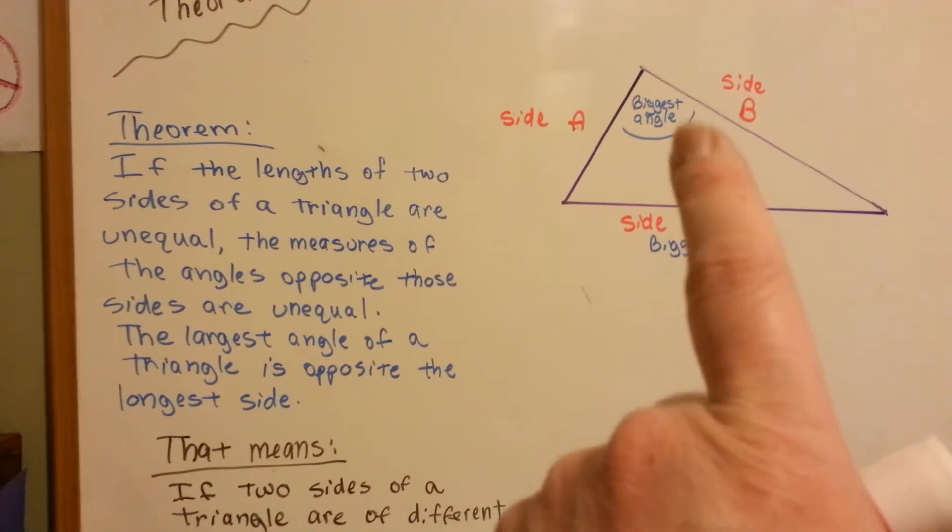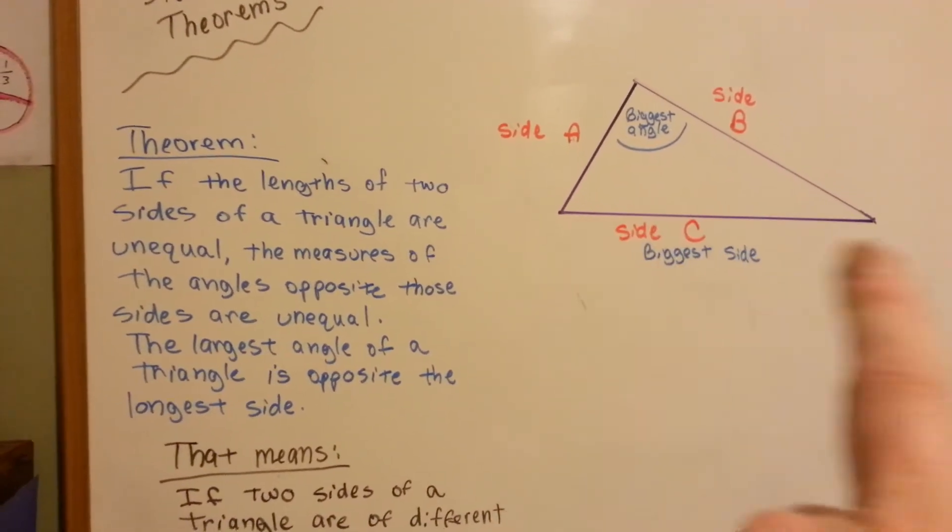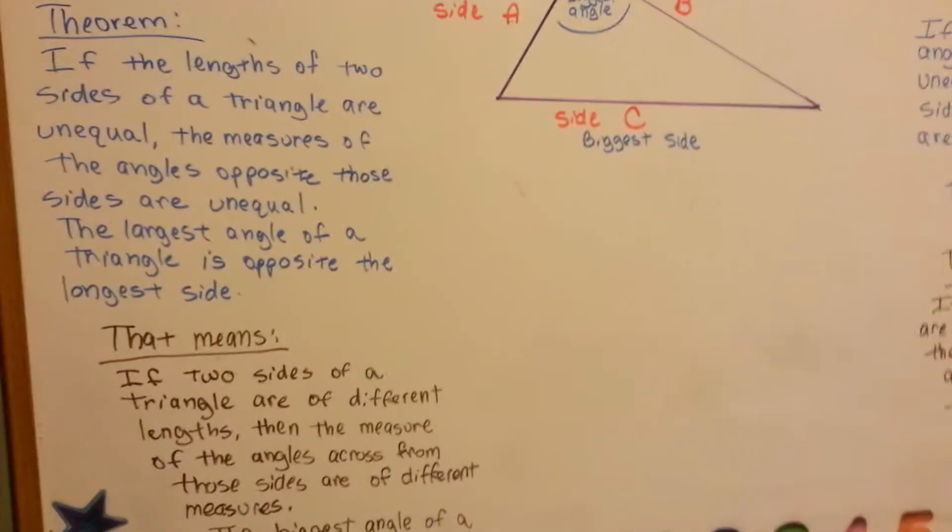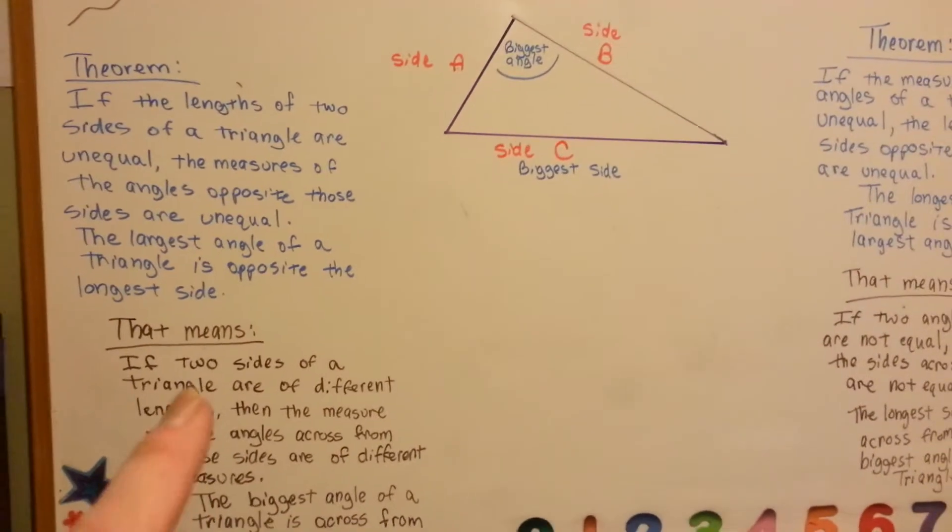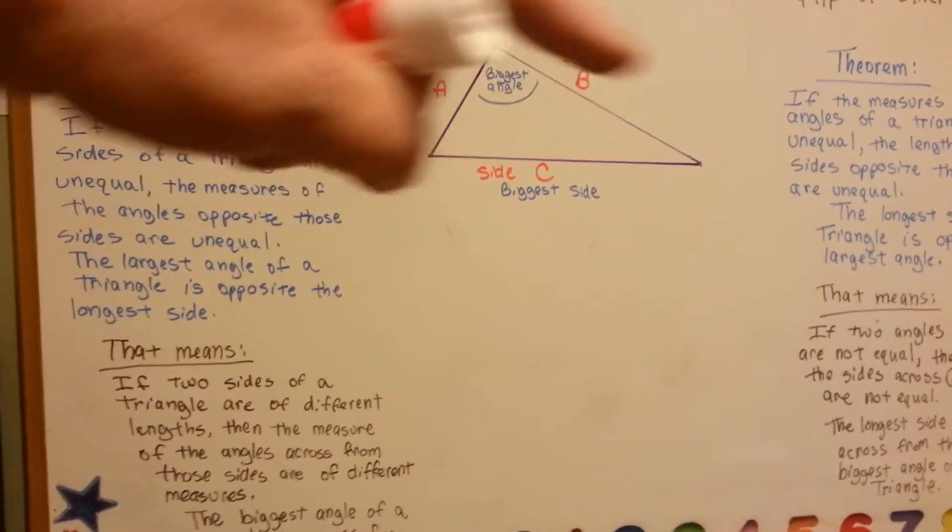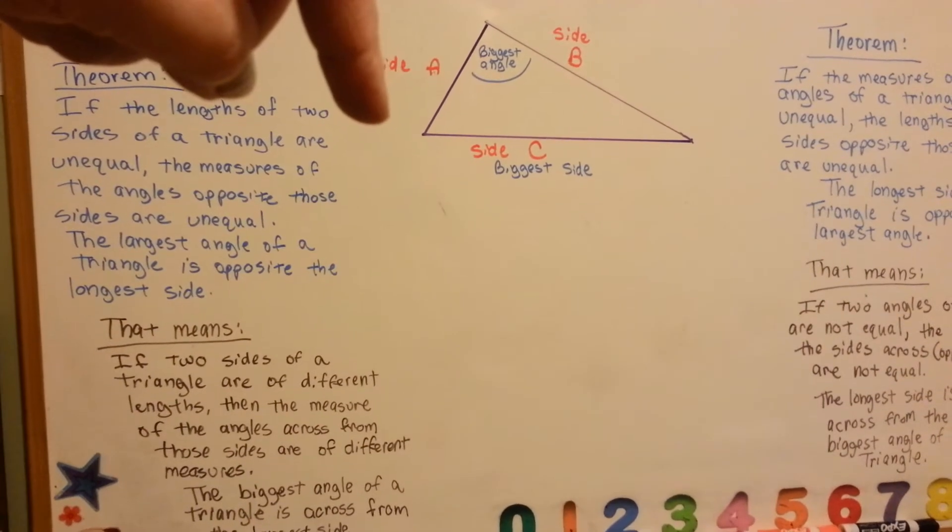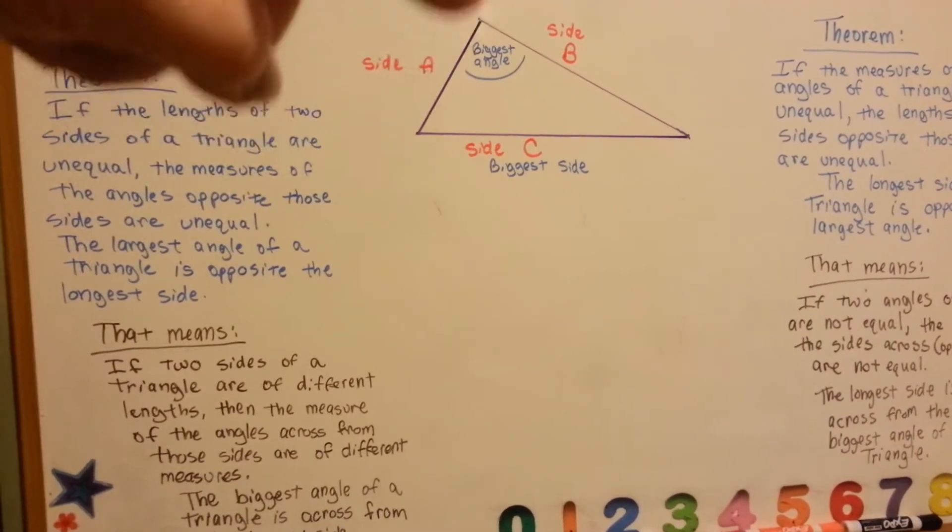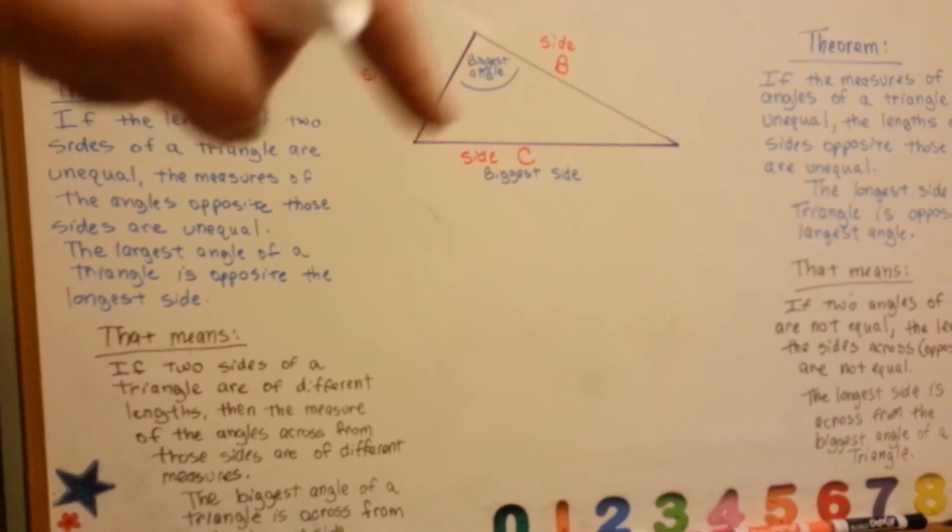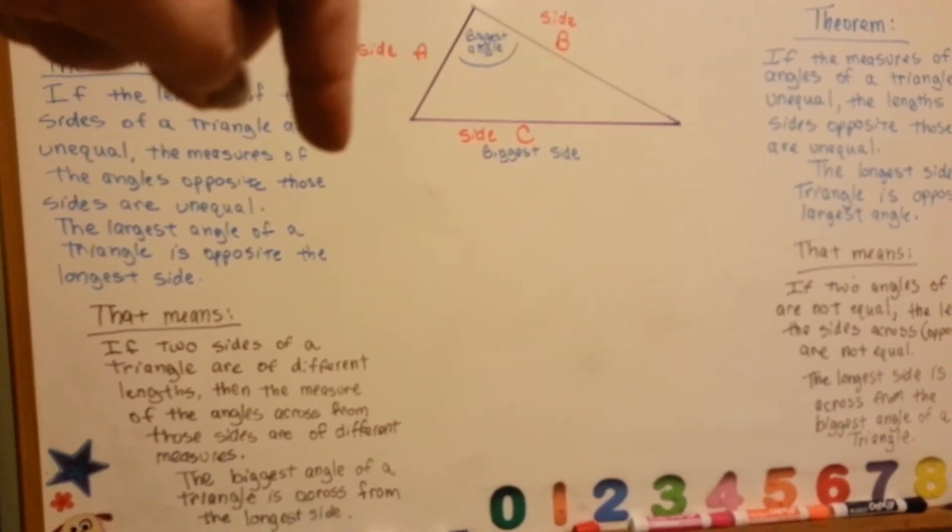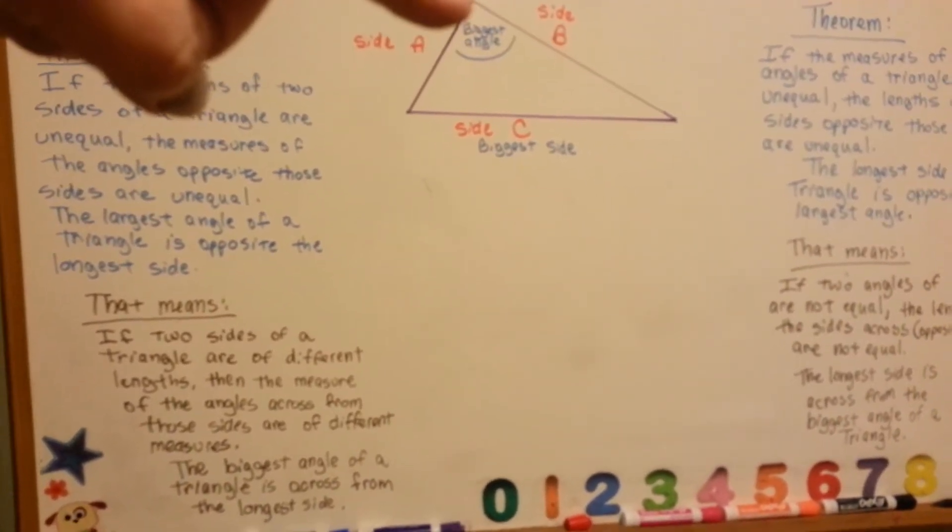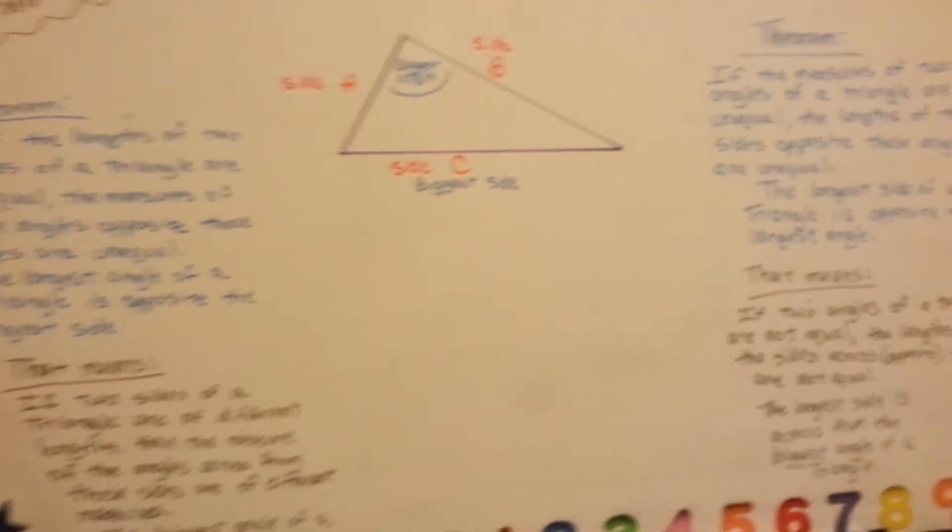The largest angle of the triangle is opposite the longest side, and it means if two sides of a triangle are of different lengths, like A and B here, and the measure of the angles across from those sides are different measures, like these two angles are not the same, then the biggest angle is across from the longest side. That makes sense.